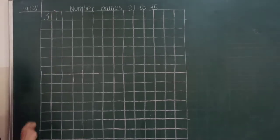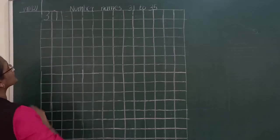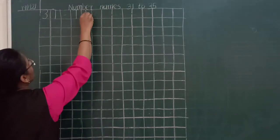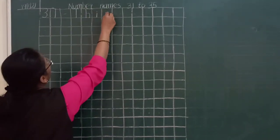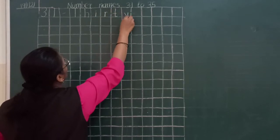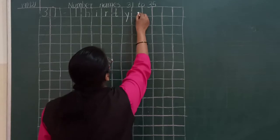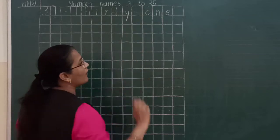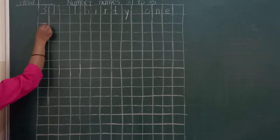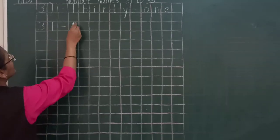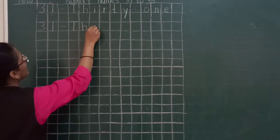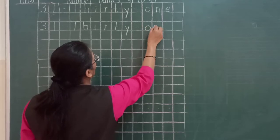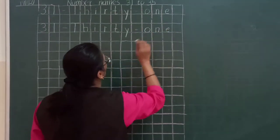Write 31. Give a dash. First we will write the spelling of number 30 — the first letter in capital: T-H-I-R-T-Y, 30. And the spelling of number 1 is O-N-E. So it is 31. One more time: 31. Give a dash and write T-H-I-R-T-Y, 30, then O-N-E, 1. So, 31.